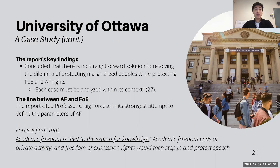The strongest attempt to define the parameters of academic freedom was when the report cited Professor Craig Forsyss, deferring to Universities Canada's definition, saying academic freedom must be based on 'reasoned discourse, rigorous extensive research and scholarship, peer review, and applicable standards.' In his view, academic freedom ends at private activity, and freedom of expression rights would then step in to protect speech.